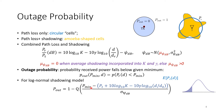To find the outage probability we need k, the path loss constant, and the distance d. This gives us the mean received power without shadowing. We subtract that quantity from the threshold and divide by the standard deviation to get the argument of the Q-function. To evaluate the Q-function, we use tables, MATLAB, or a calculator, and then compute one minus that value.